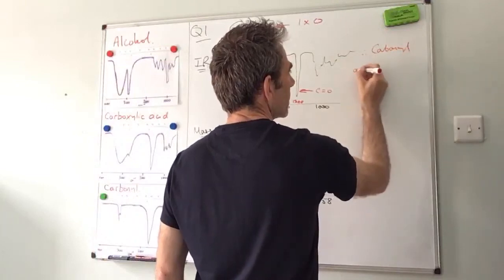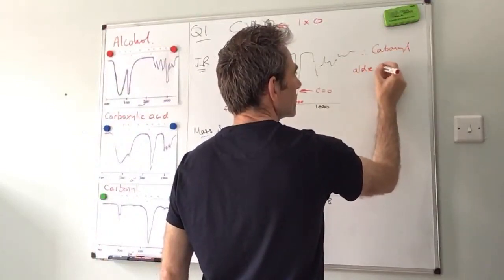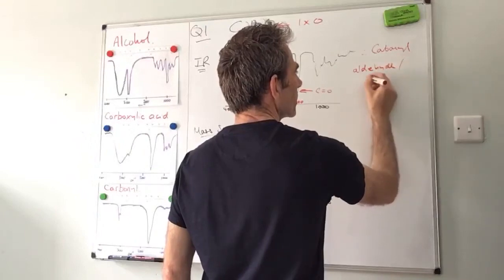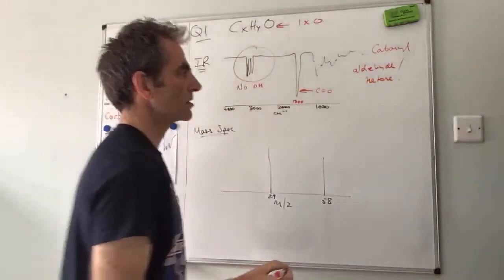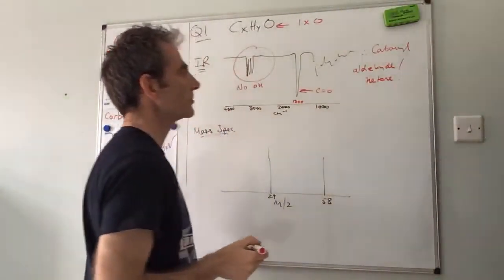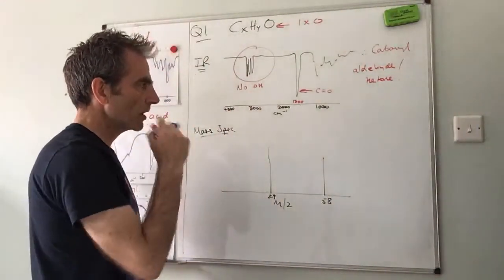So at this point we know that it's either an aldehyde or a ketone. It's definitely got a C=O.